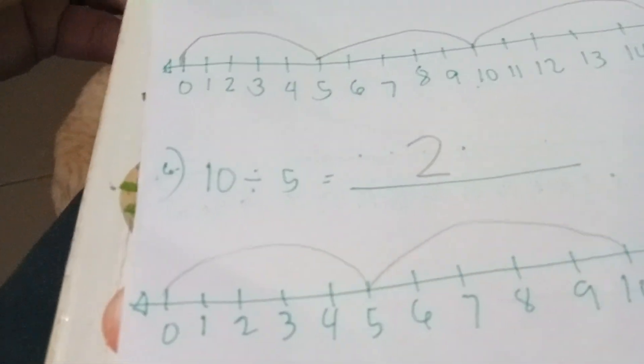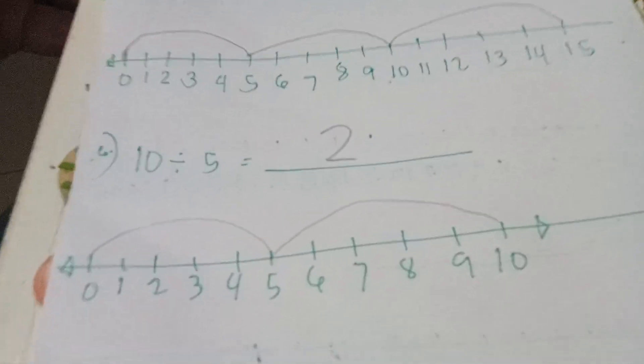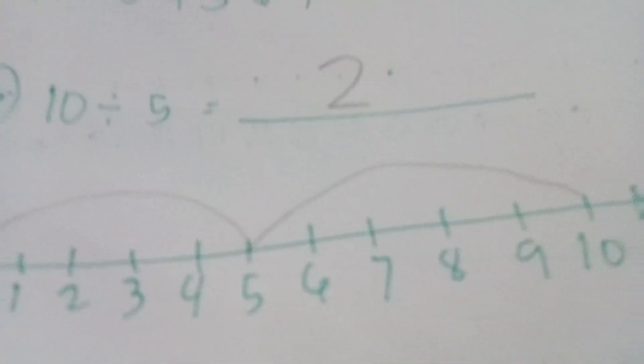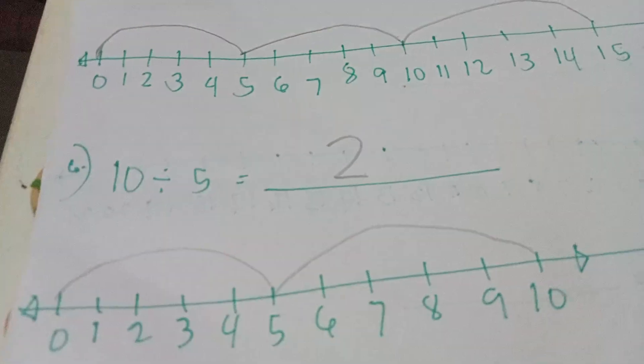Good job! You got the right answer, because 10 divided by 5 is 2. Number lines from 0 to 10, so we have 2 curve lines. That's good.